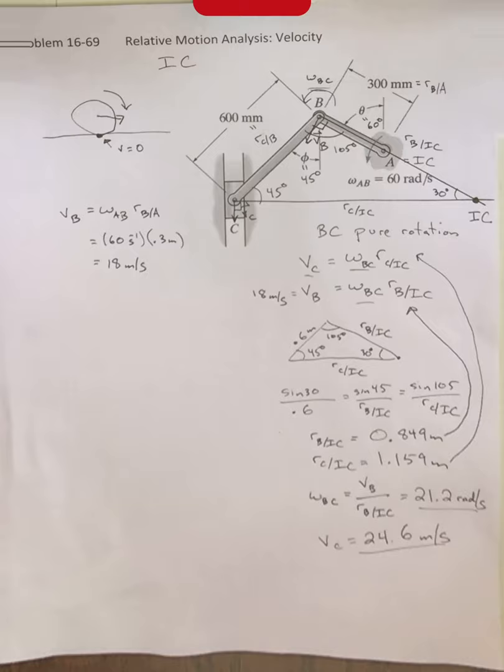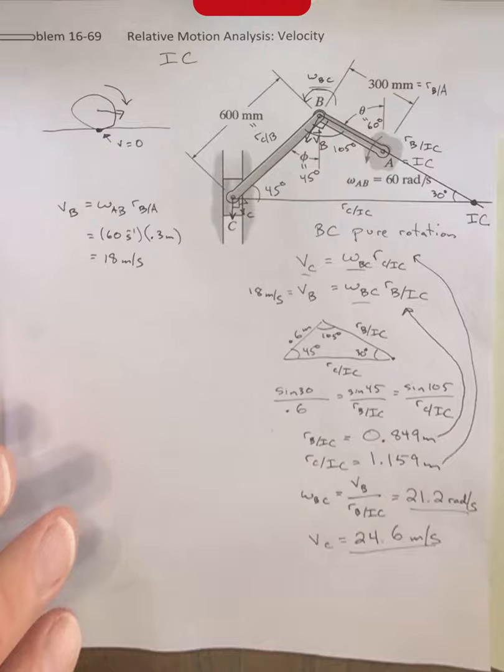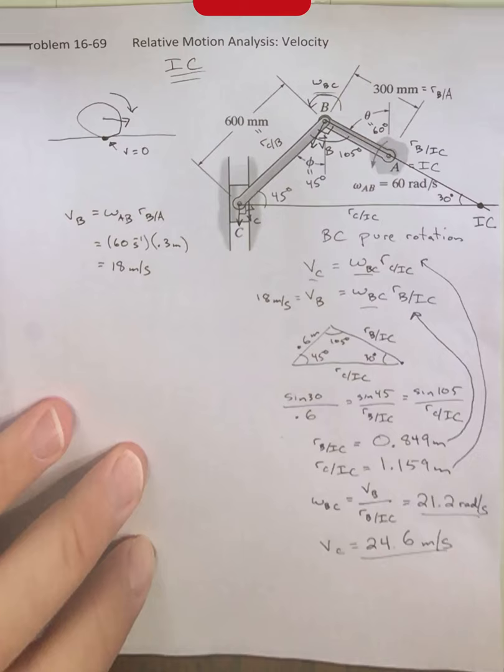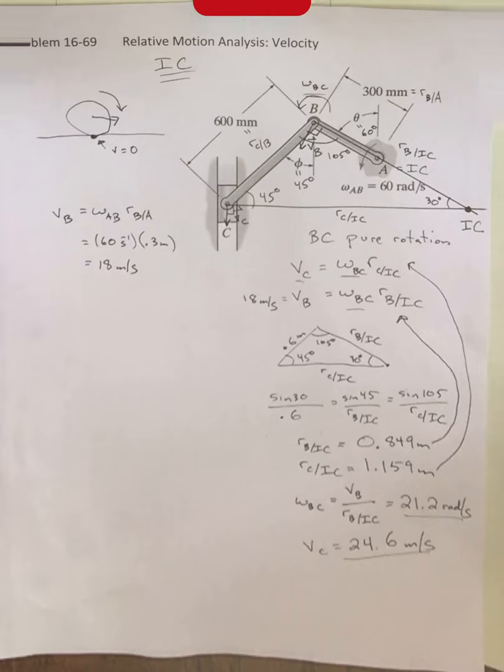Therefore, consequently, because ergo it follows that, henceforth accordingly, we will use this instantaneous center method quite frequently moving forward because it's a faster way of determining velocities. Notice that it is useful for determining velocities. We will still have to go back and use the full vector version once we start getting into accelerations.